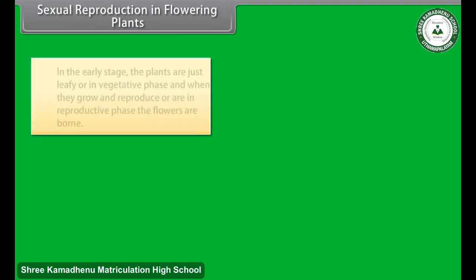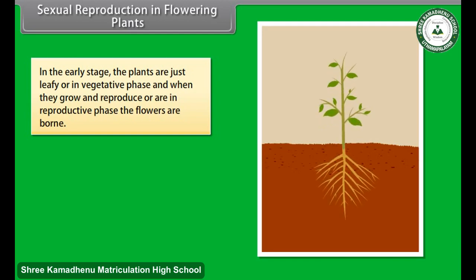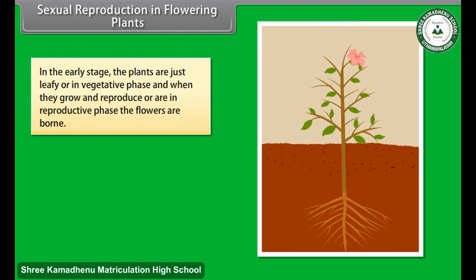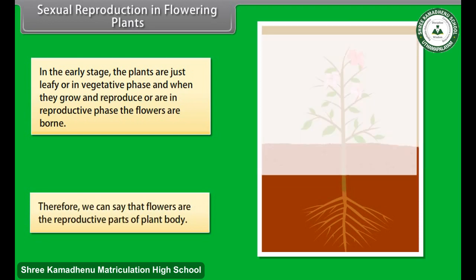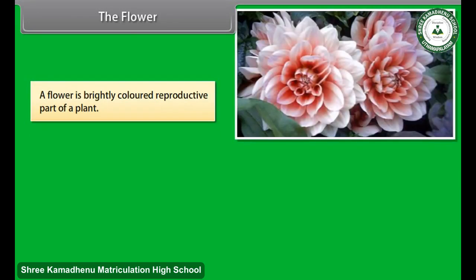In sexual reproduction in flowering plants, in the early stage the plants are just leafy or in a vegetative phase. When they grow and reproduce, or are in the reproductive phase, the flowers are born. Therefore, we can say that flowers are the reproductive parts of the plant body. A flower is a brightly colored reproductive part of a plant.